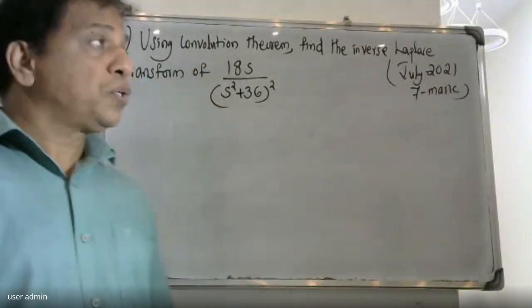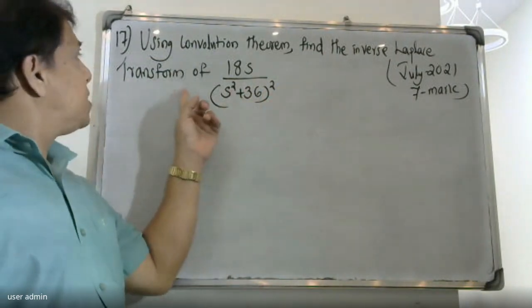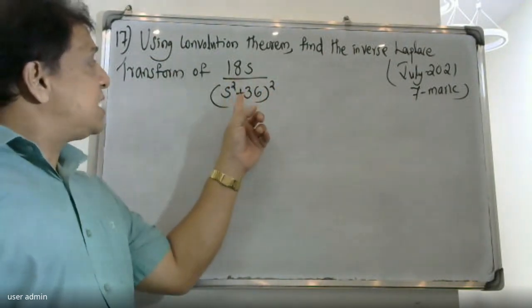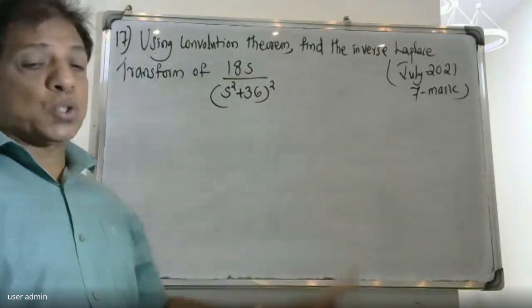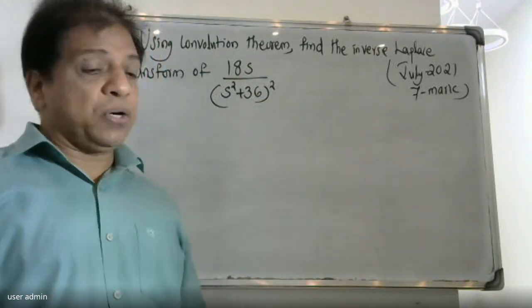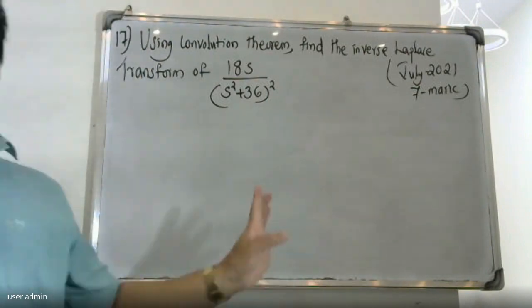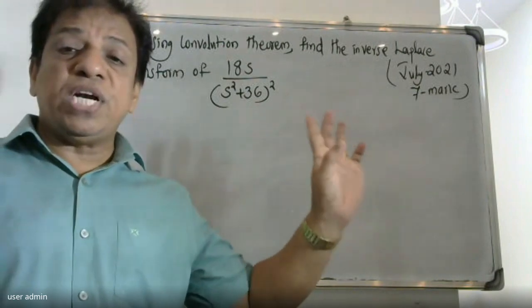Good morning students. Today's question is: using convolution theorem, find the inverse Laplace transform of 18s divided by s squared plus 36. This is a convolution theorem problem to find the inverse Laplace transform.